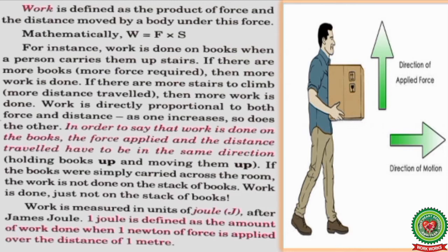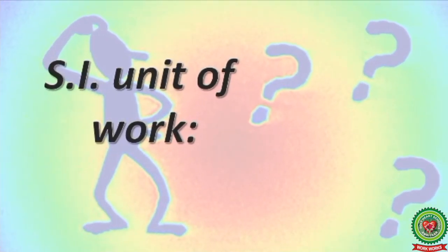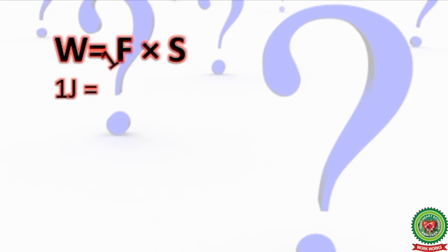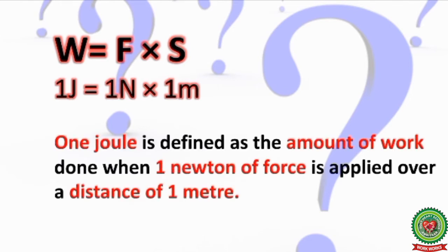Work is measured in units of Joule, named after James Joule. One Joule is defined as the amount of work done when one Newton of force is applied over a distance of one meter. The SI unit of work is Joule, denoted by the capital letter J. So: if a force of one Newton is applied on an object and the object covers a distance of one meter, one Joule of work is said to be done.